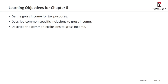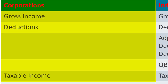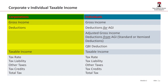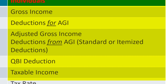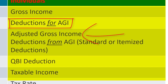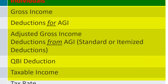We're going to talk about gross income, some inclusions to gross income, and some exclusions to gross income. This video is all about realization and recognition, which are key tax terms. This slide compares how taxable income is calculated for corporations versus individuals. For corporations it's straightforward: gross income less deductions equals taxable income. For individuals it's more complicated — gross income minus above-the-line (for AGI) deductions gets you to adjusted gross income, then deductions from AGI (standard or itemized) and the QBI deduction bring you to taxable income.